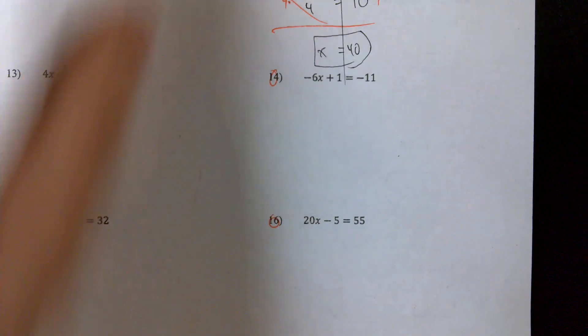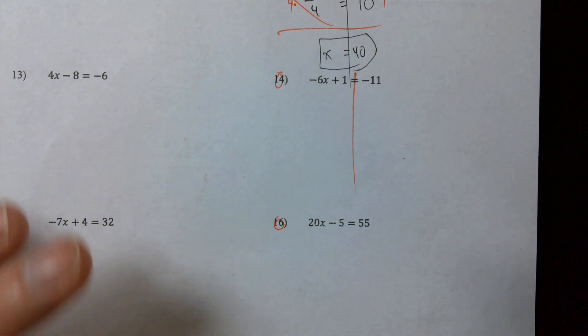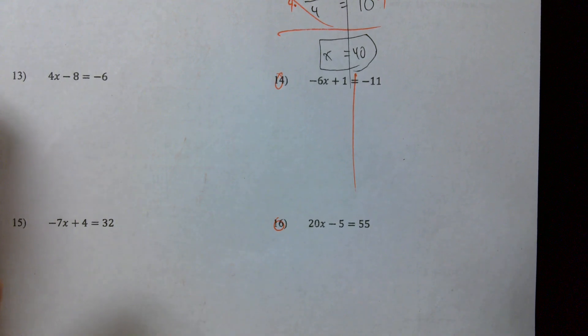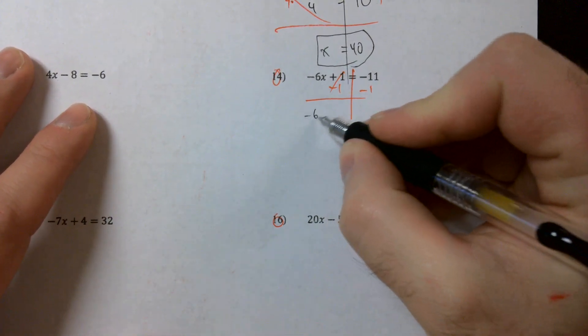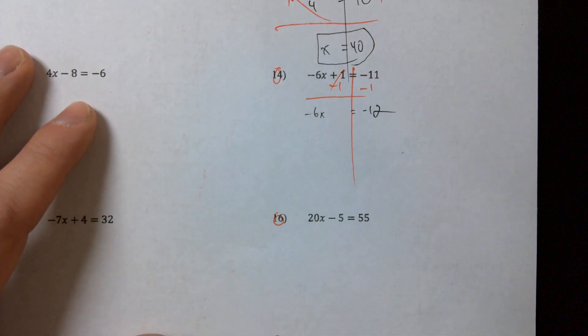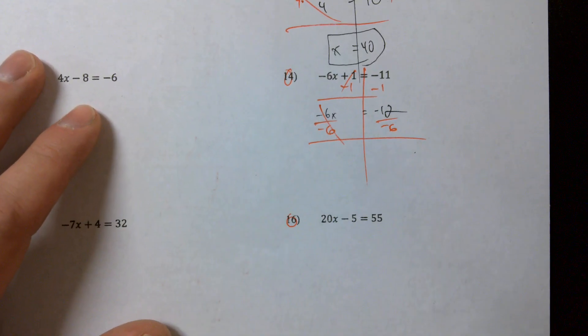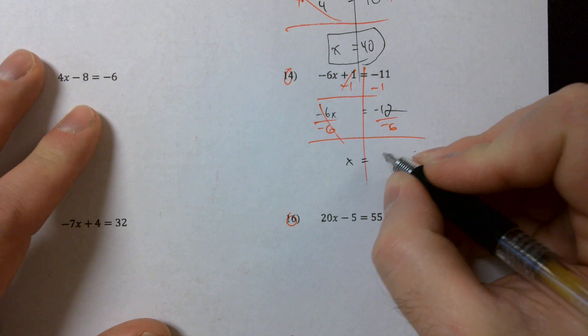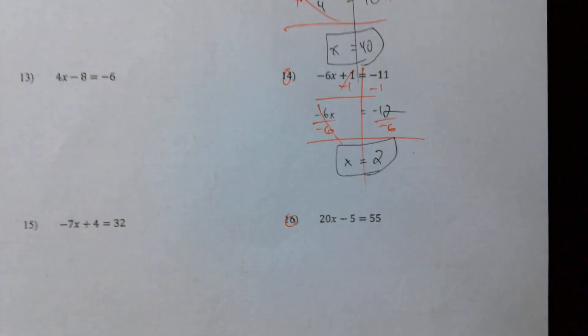Number fourteen, split my equals sign. I'm going to start by doing what? Negative one, minus one, good. Seven gives me negative six x equals negative twelve. And then I'll divide by negative six. Now what's a negative divided by a negative going to give me? Positive. And what's twelve divided by six? Two. Boom, x equals two.